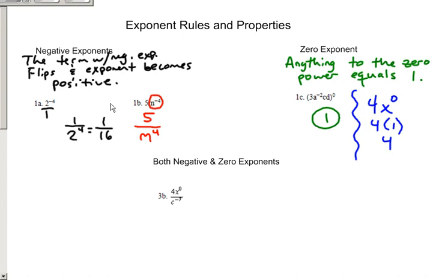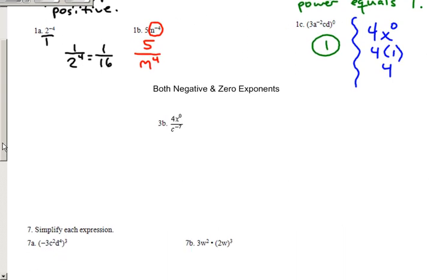So, now let's say we get to a problem here that has both negative and zero exponents. Well, I know that x to the zero here, anything to the zero power is 1, so that becomes 4 times 1. I also know that anything with a negative exponent flips, so if it's on bottom, it goes to the top, the exponent becomes positive. I now have my final answer is 4c to the 7th power.